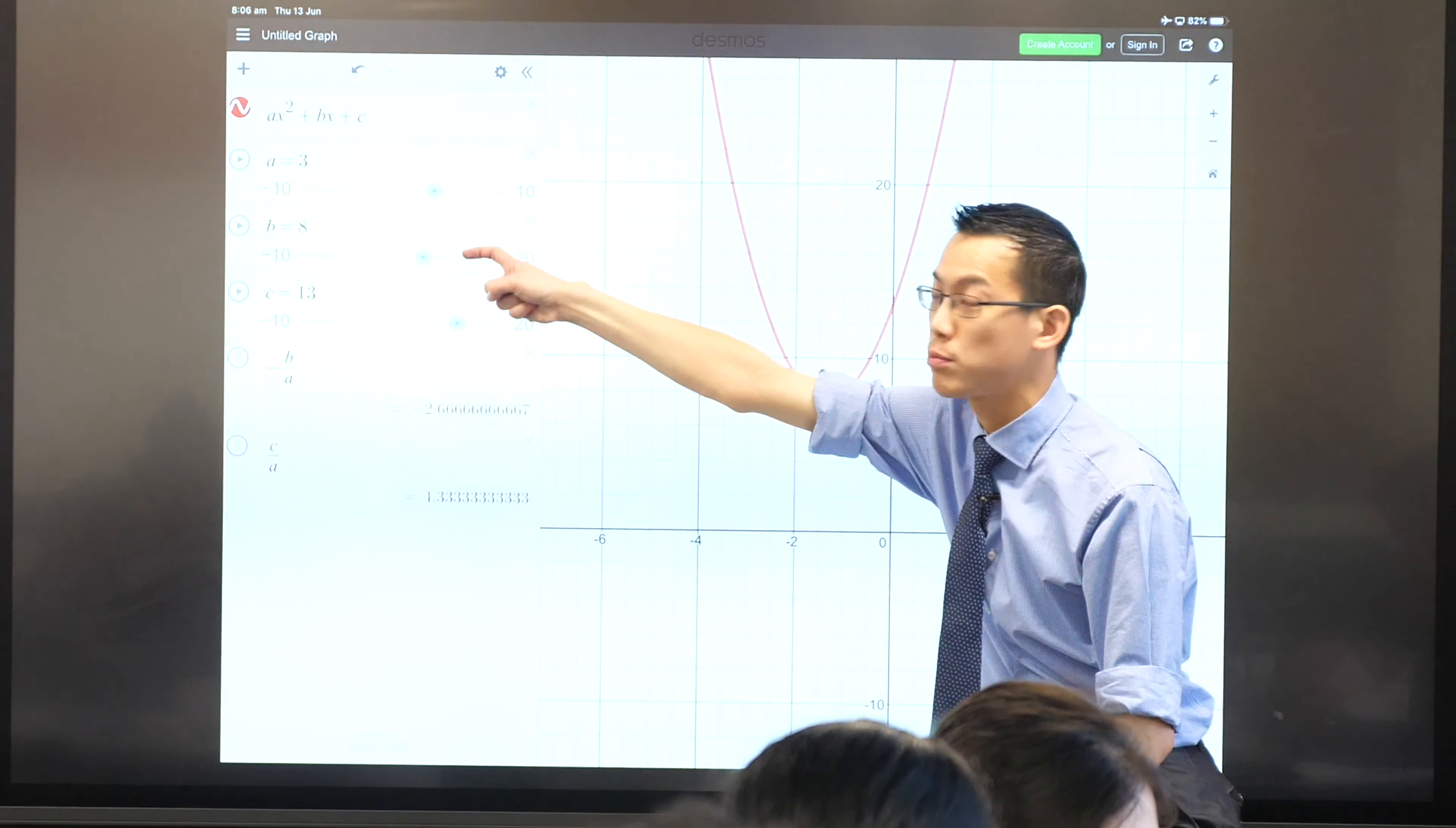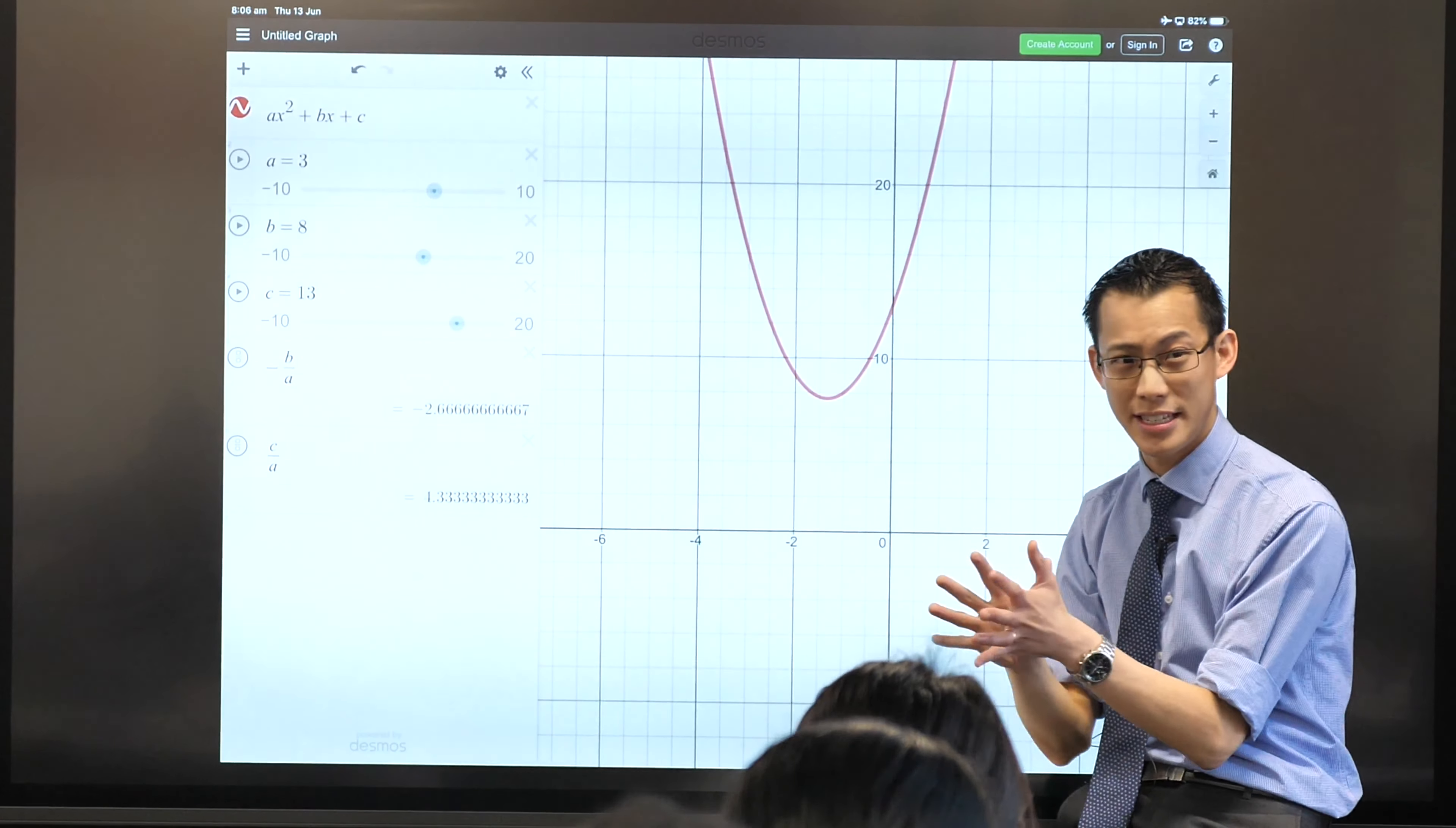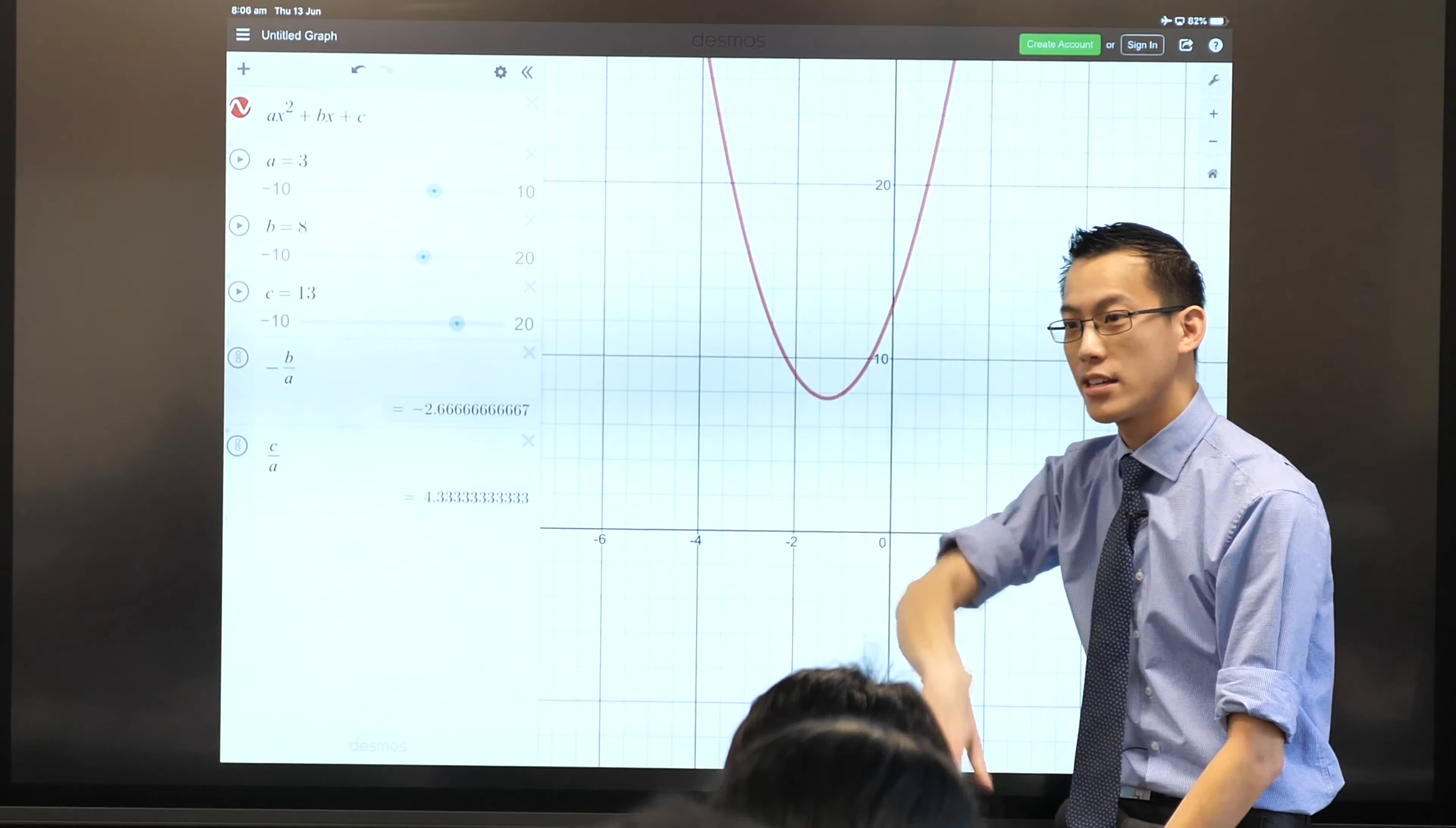If I gave you this thing here, 3x squared plus 8x plus 13, I want you to think back. We have a way of determining, before we even start solving this, we have a way of determining, it starts with the letter d, whether something will have zeros or not. What's it called? It's the discriminant. And the discriminant is b squared minus 4ac.